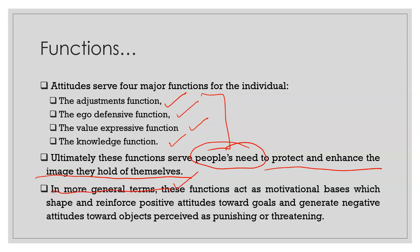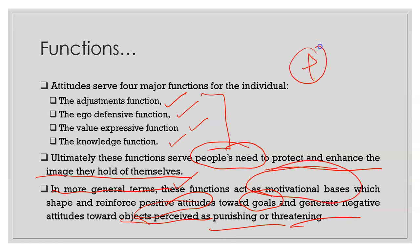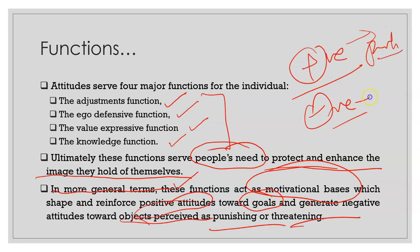In general terms, we can have a positive attitude or a negative attitude. We can have a positive attitude toward our goals, or a negative attitude toward objects we perceive as punishing or threatening. These functions act as a motivational base for both attitudes — for positive attitude they push you toward that object, and for negative attitude they ask you to stay away from that object.